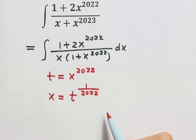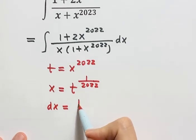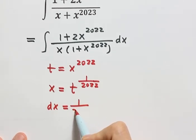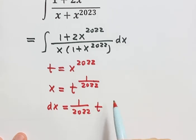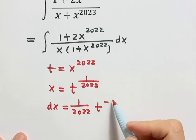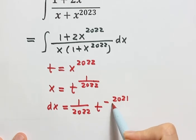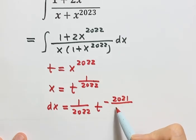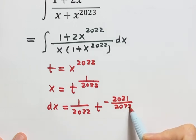Then take the derivative of both sides. The exponent comes down, giving us the exponent minus 1, which simplifies to negative 2021 over 2022. Then dt.